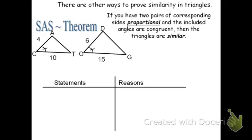That is, the two sides that are proportional — where they meet, that has to be the angle you're given. So in this case, we have side AC and TC on that little triangle, and where they meet is angle C. We're told angle C is congruent to angle O, and angle O is where DO and side GO meet — that is the included angle. Notice it says we need corresponding proportional sides. We don't need the sides to be equal; they need to be proportional, meaning they have the same ratio. I'll begin with my angle: angle C and O are congruent, given — we had the tick mark there.